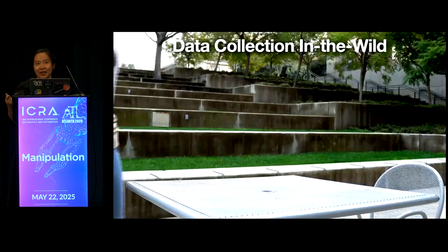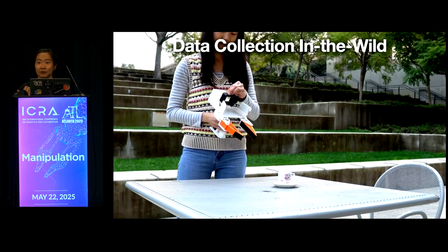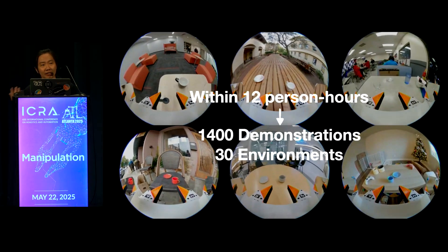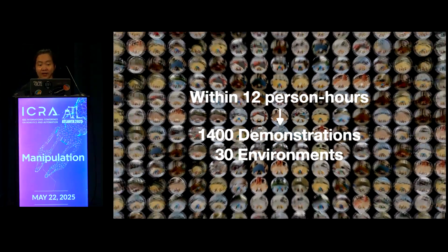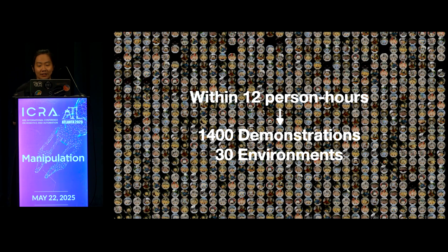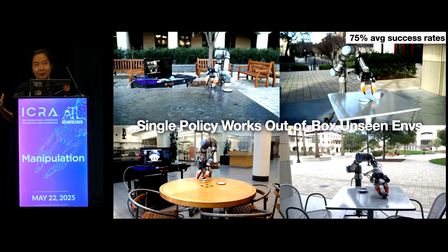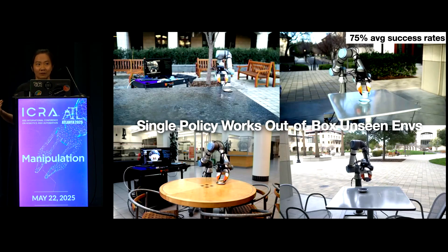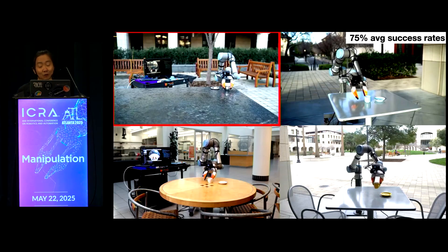Because UMI is so portable, you can easily carry it around to many different environments and collect training data for the tasks you care about. In our paper we tested that within just 12 person-hours, you can collect more than 400 demonstrations over 30 different environments — imagine dragging a robot to teleoperate in all those environments, which would be very difficult logistically. With all this diverse training data, you can train a single robot policy that works out of the box in new environments, including an outdoor environment on a water fountain the robot has never trained on.